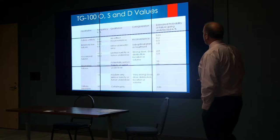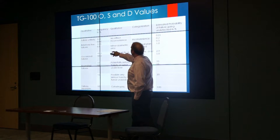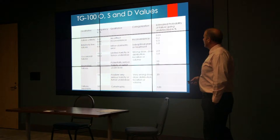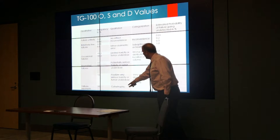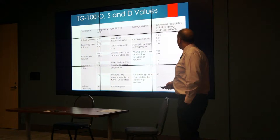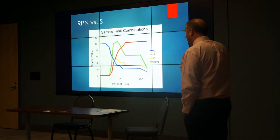This is a table from TG-100 showing exactly how these numbers are assigned, in 10 rows. For example, a probability or occurrence of 1 would be a probability of 0.01%, or 1 in 10,000 probability of occurring. A severity of 1 would have no effect, ranging all the way to 10 which would be catastrophic. The probability of going undetected ranges from 0.01 also to greater than 20% not being detected as it goes through the steps.